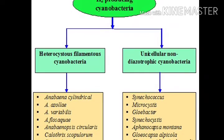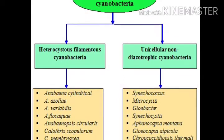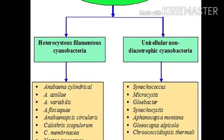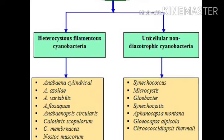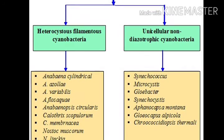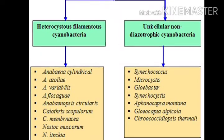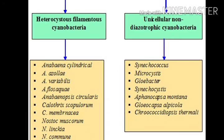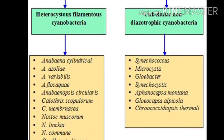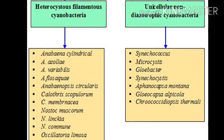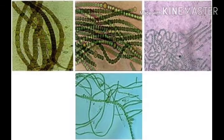Cyanobacteria are classified into two types: heterocystous filamentous cyanobacteria and non-heterocystous cyanobacteria. The heterocyst is a body part where the total nitrogen fixation work is accomplished. These two categories of bacteria are based on the presence of heterocysts. The other type is also called diazotrophic cyanobacteria, which we covered in the last lecture. There are different types of heterocystous as well as unicellular bacteria.